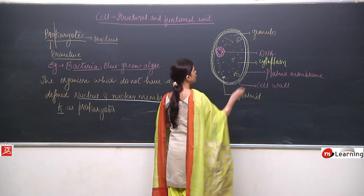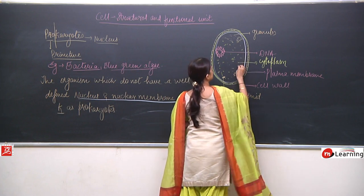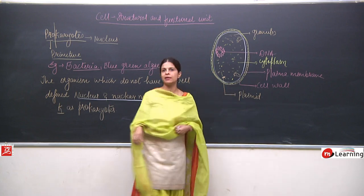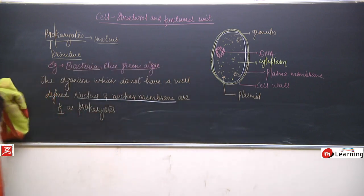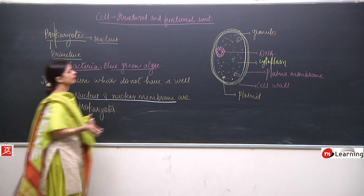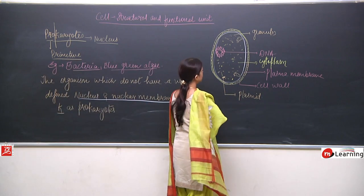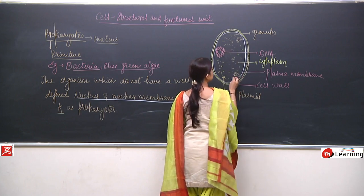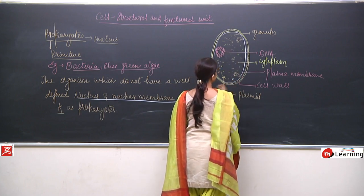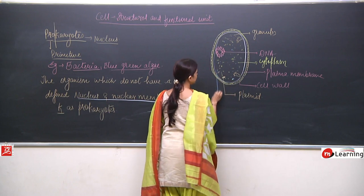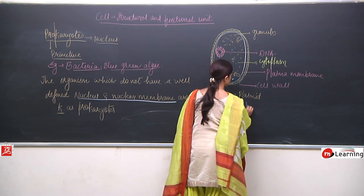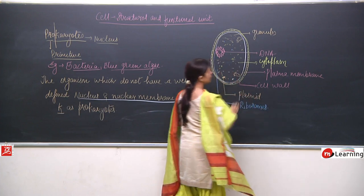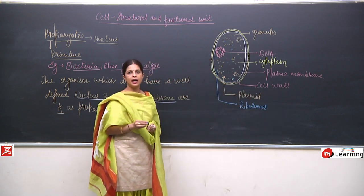Along with that, some small ribosomes are also present. These small structures present in the prokaryotic cell are ribosomes.